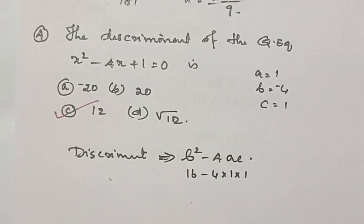The discriminant of the quadratic equation x squared minus 4x plus 1 equals 0 is? The discriminant is the value of b squared minus 4ac. The answer is 12.